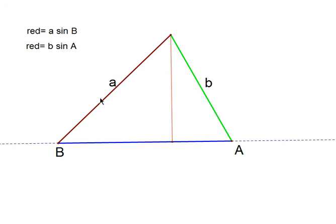There's nothing special about the labels A and B here. I could have used C. So that's where we get a over sine A equals b over sine B equals c over sine C.